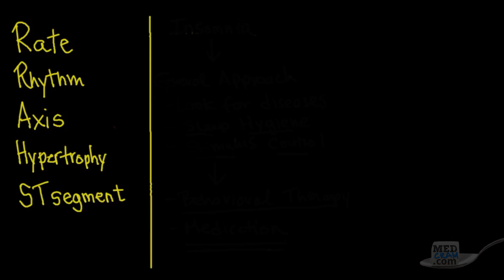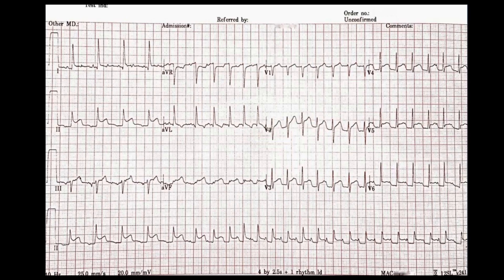Let's first look at the rate on this EKG. At the bottom we can see the criteria for what is set. The speed of the EKG is 25 millimeters per second, which is pretty standard. What's not standard is the 20 millimeters per millivolt — you can see that the standardization box is about twice as high as it would normally be. Keep that in mind.